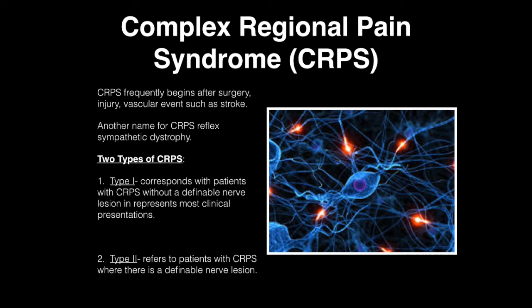The first thing I want to talk about is complex regional pain syndrome. Complex regional pain syndrome frequently begins after surgery, a vascular event such as a stroke, or it can also be an injury. Another name for complex regional pain syndrome is reflex sympathetic dystrophy.